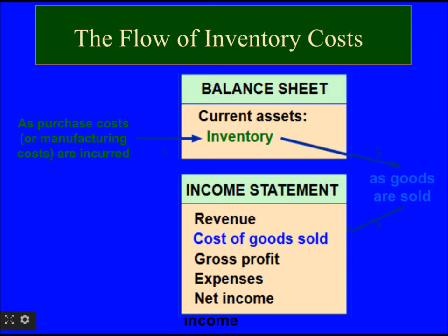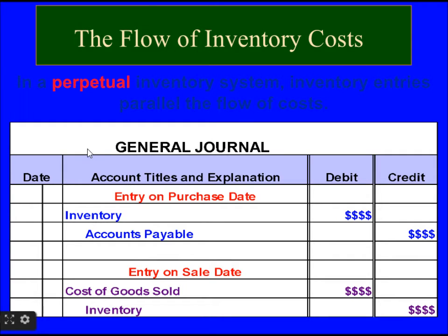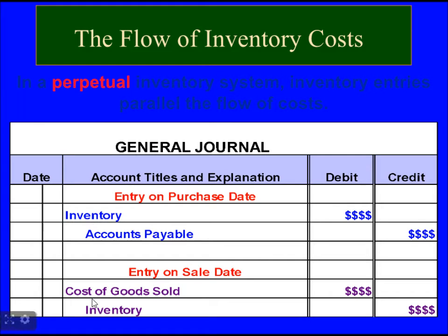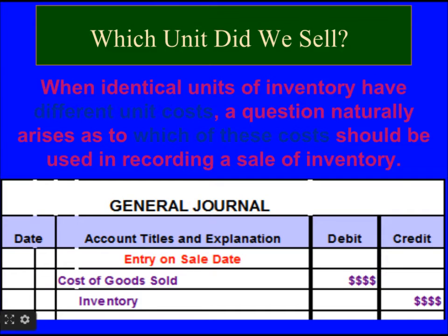In a perpetual inventory system, inventory entries parallel the flow of costs. Whenever the company purchases inventory, it does a journal entry with inventory on the debit side and accounts payable on the credit side. Whenever inventory is sold, the entry on the sale date is cost of goods sold on the debit side and inventory on the credit side.